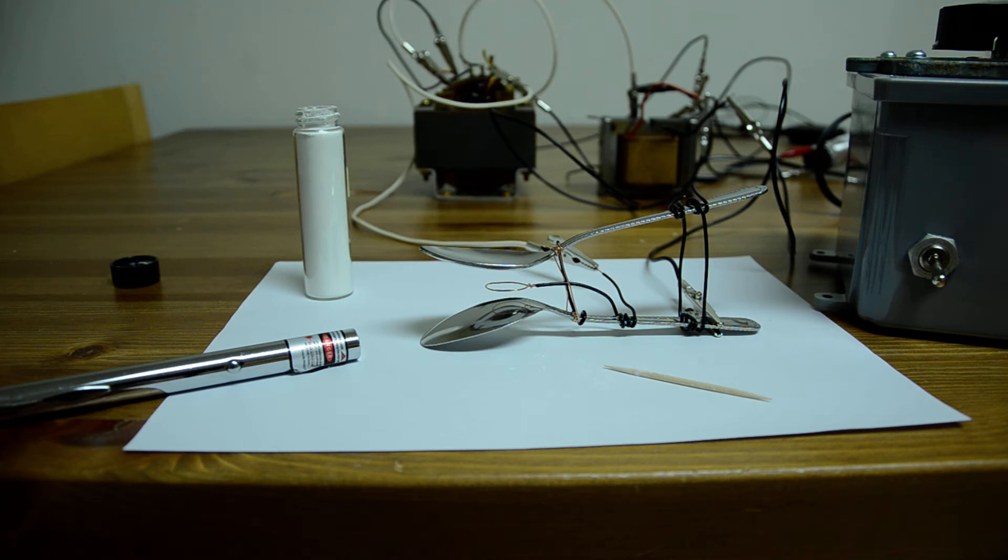This is a homemade ion trap, which is made up of two spoons connected together, and in between them there's a loop of wire.